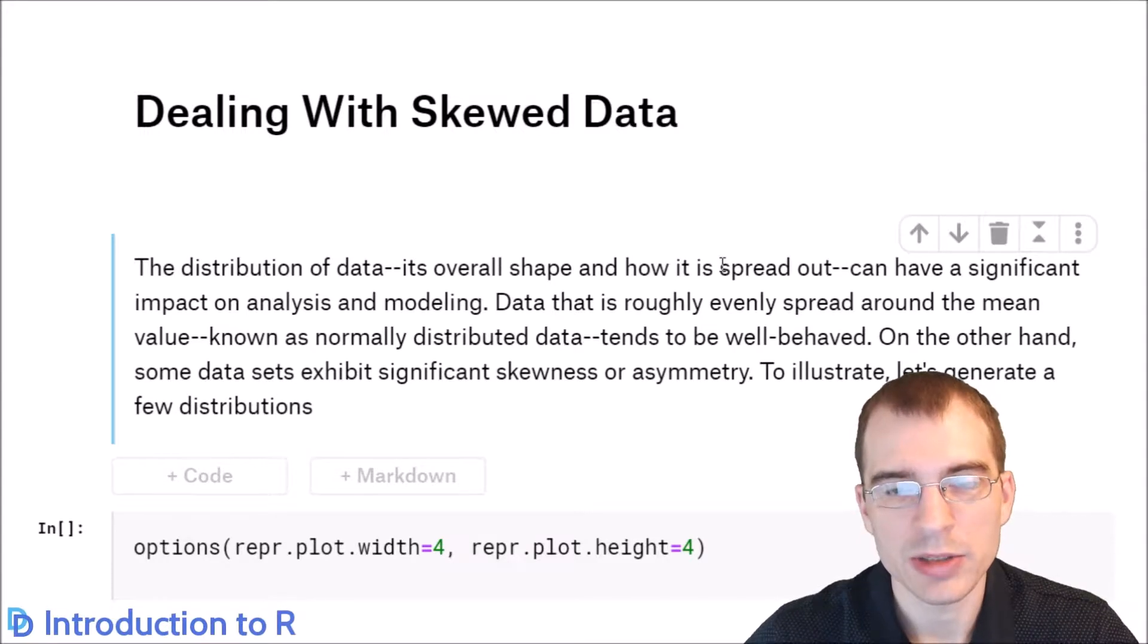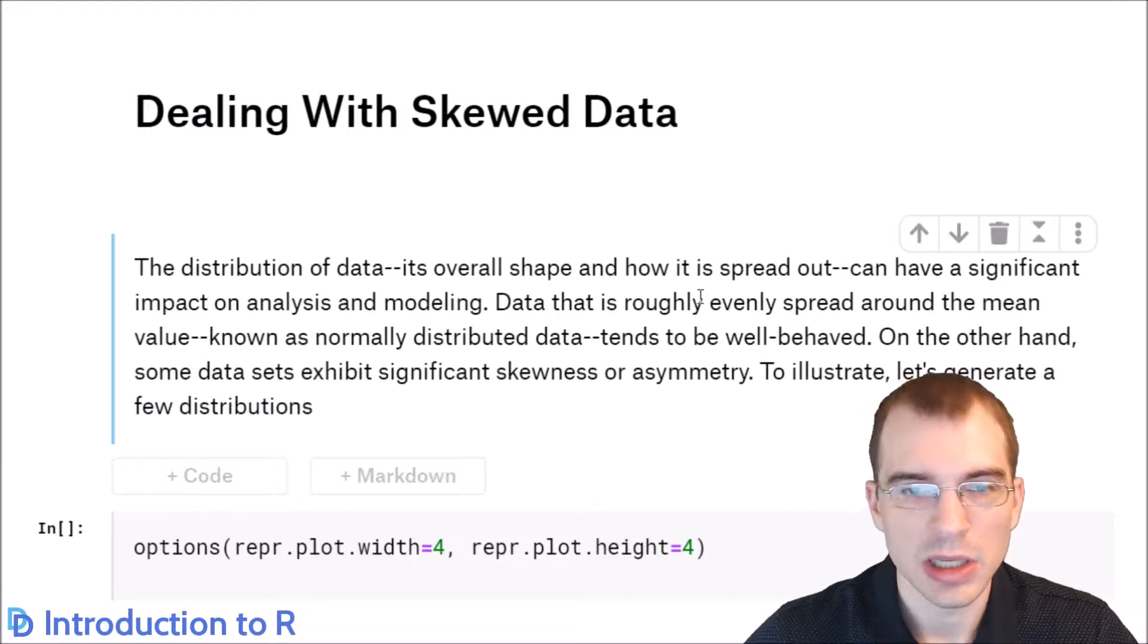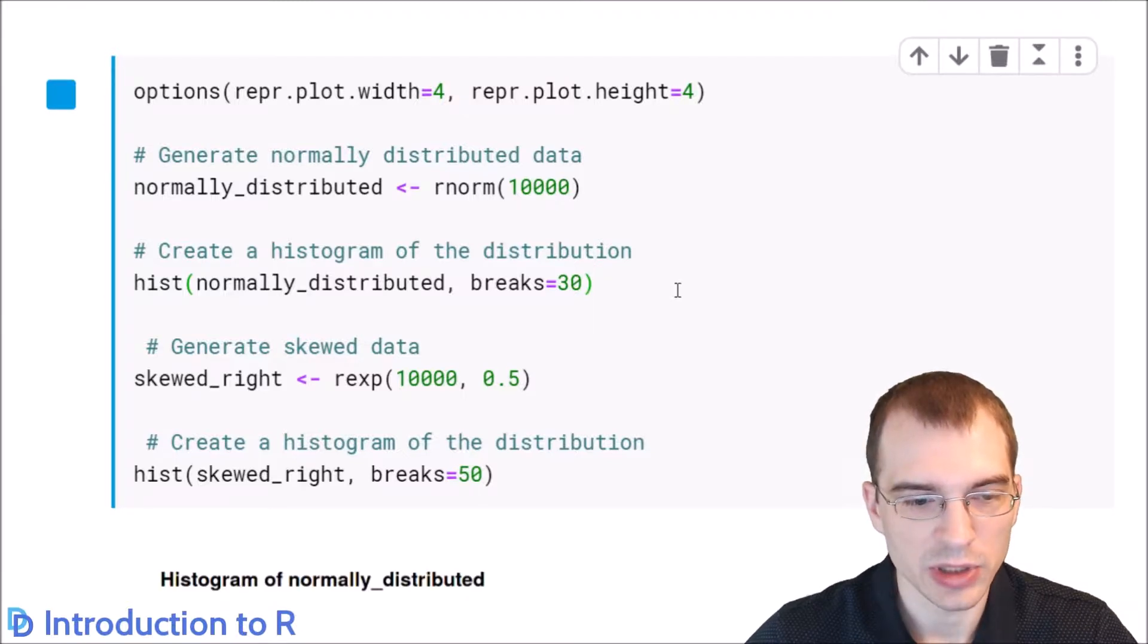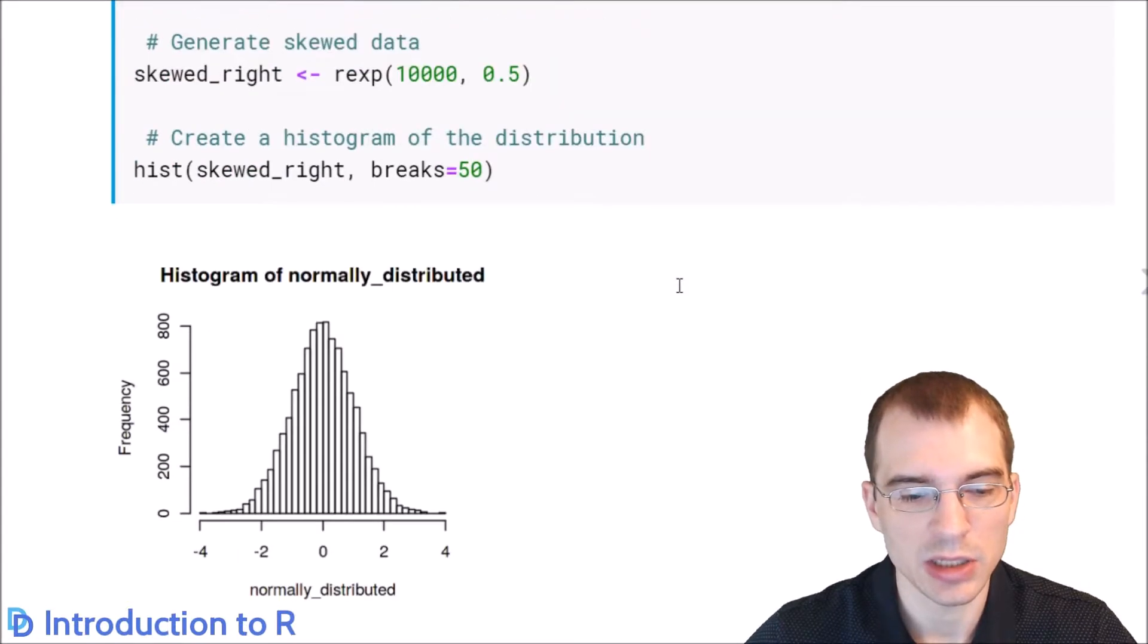Another thing that you might want to do when you're dealing with numeric data is reducing data skew. Data that is symmetric and tends to be centered around a certain value is generally easy and good to work with. But sometimes you'll encounter data that is more irregular. In some applications trying to reduce that irregularity and data skew can provide better results. First let's generate some data here and look at a histogram of the skew to give you an idea of what skewed and normally distributed data looks like.